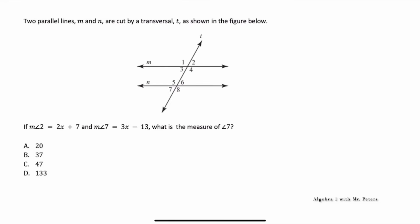On a geometry EOC, you're always going to see parallel lines cut by transversals. So they tell us that angle 2 is equal to 2X plus 7, and that angle 7 is equal to 3X minus 13, and they want us to figure out what is the measure of angle 7. When we look at both of these angles, we should know that they are equal because they are alternate exterior angles — they have the same exact measure.